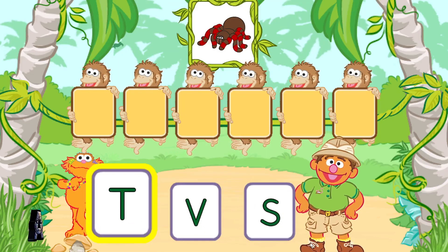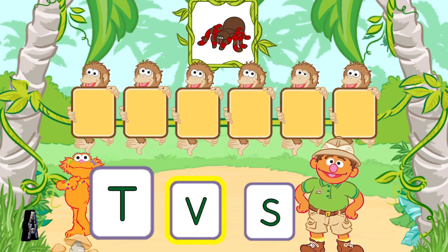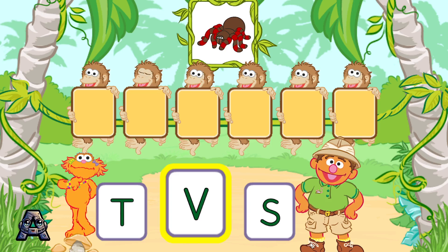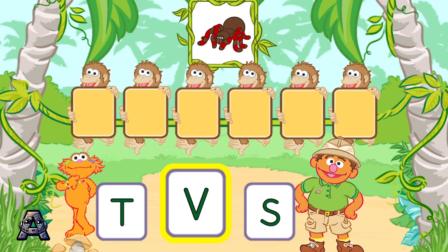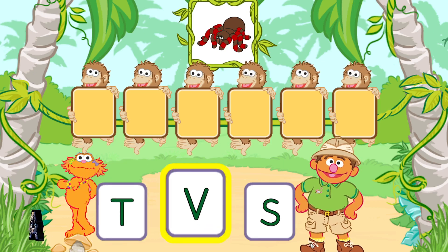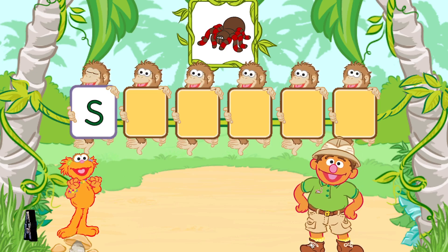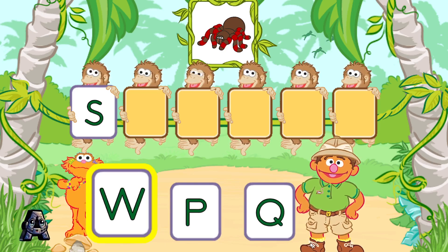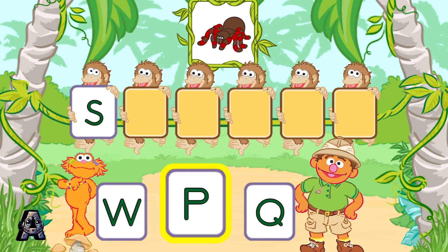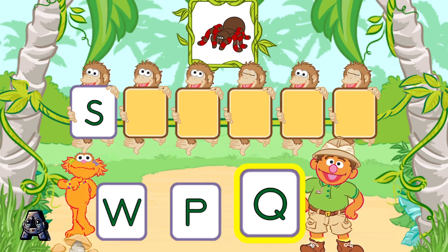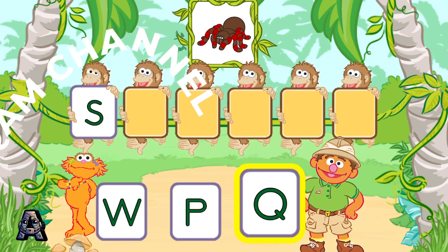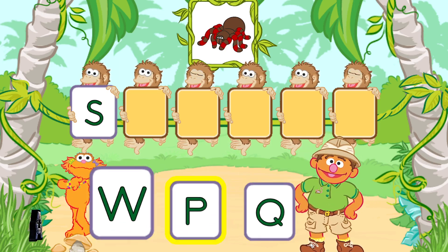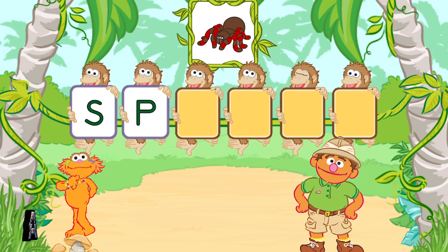Let's put these letters in order to spell the word spider. V is not the first letter in the word spider. Try again. Pick the letter S. That was great! S is the first letter in the word spider. Next, pick the letter P. Nice job! P is the next letter in the word spider.